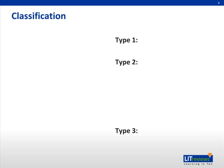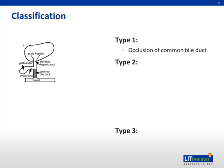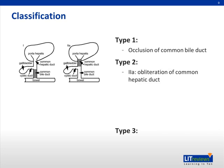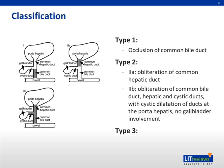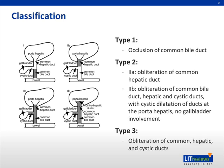Biliary atresia is classified as follows. Type 1 is occlusion of the common bile duct. Type 2a is obliteration of the common hepatic duct. Type 2b is obliteration of the common bile duct, hepatic, and cystic ducts with cystic dilatation of ducts at the porta hepatis and no gallbladder involvement. Type 3 is obliteration of the common hepatic and cystic ducts, as demonstrated in the following image.